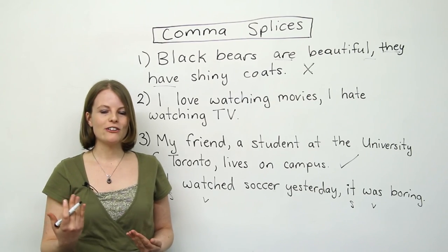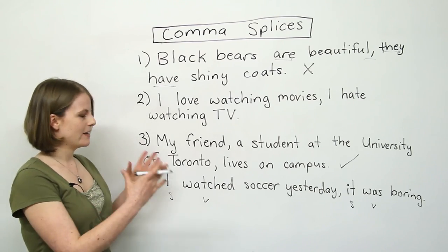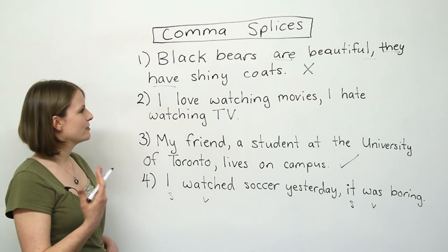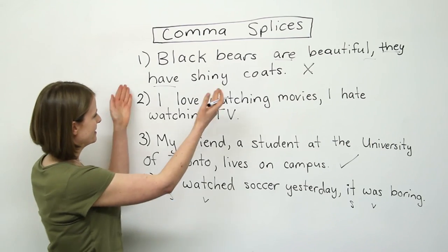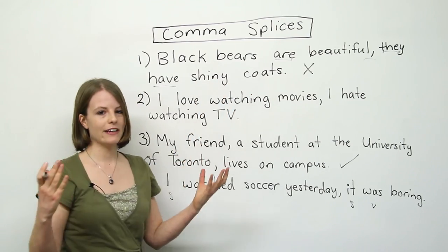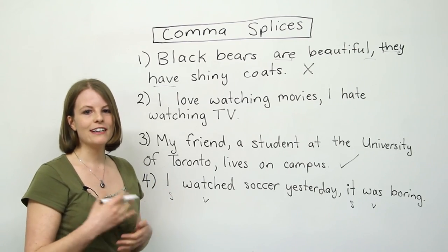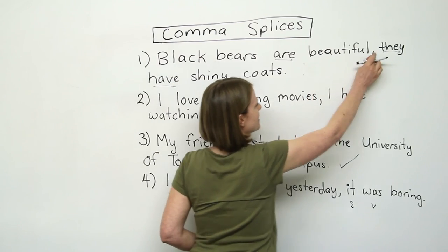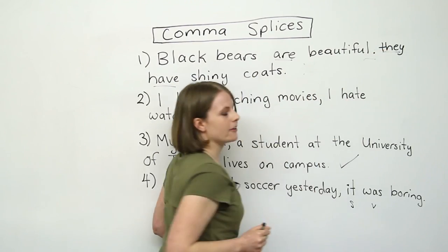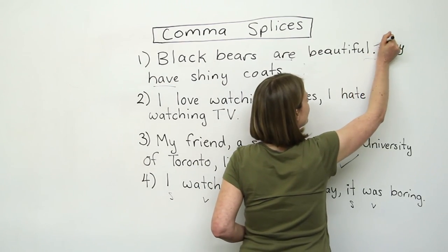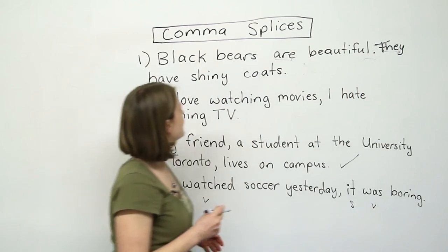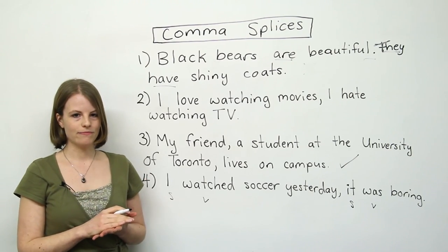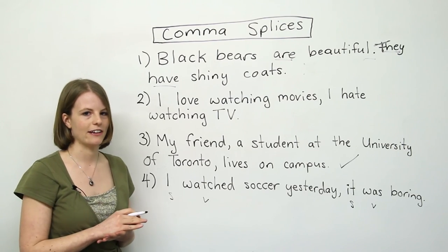In this video, we're going to talk about four different ways to fix a comma splice. The very first way is very simple. A comma splice is when you put two sentences together with just a comma. So because we have two sentences, the simplest thing to do is turn the comma into a period and capitalize the next word. The sentence becomes: 'Black bears are beautiful. They have shiny coats.' Two separate sentences — this is the easiest way to correct a comma splice.